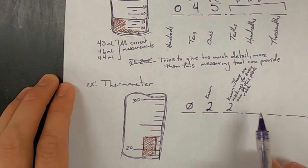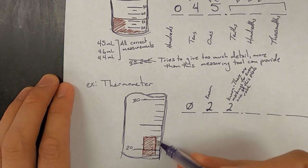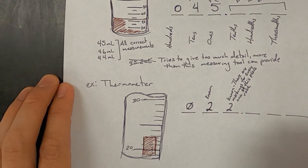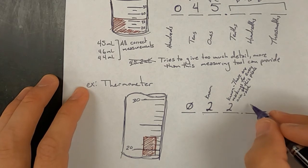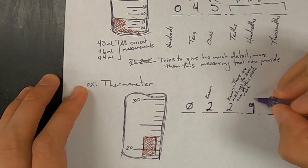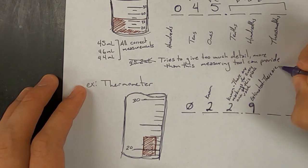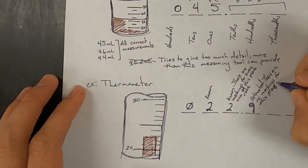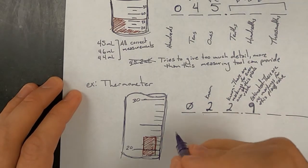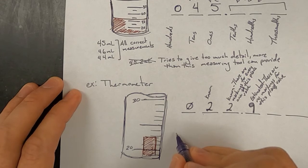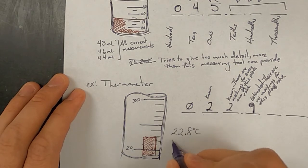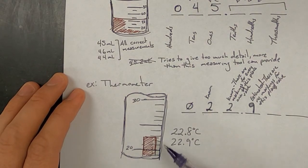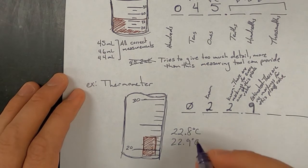The next place value, the tenths, we're trying to estimate between the 2 and the 3 where this level is. And so this is going to be our estimated digit. Whether you estimate that it's a 7, an 8, or a 9, all are valid. And so a valid answer for this would be 22.9 degrees Celsius, 22.8 degrees Celsius, 22.7 degrees Celsius. And if somebody were estimating that they actually thought it was right on this line, they could have estimated 23.0 degrees Celsius.